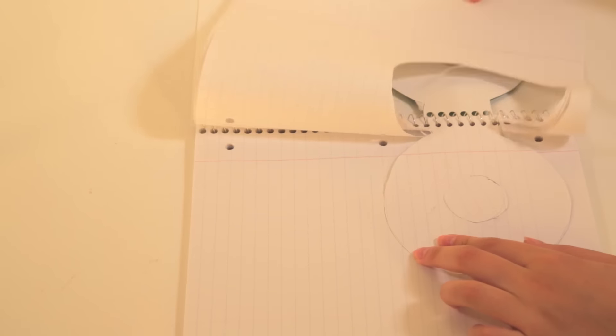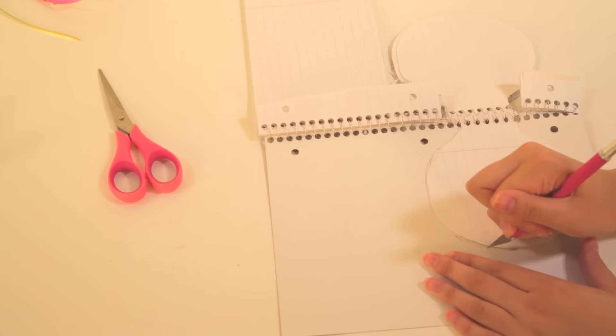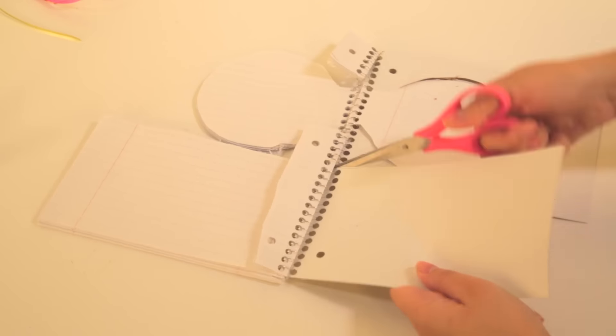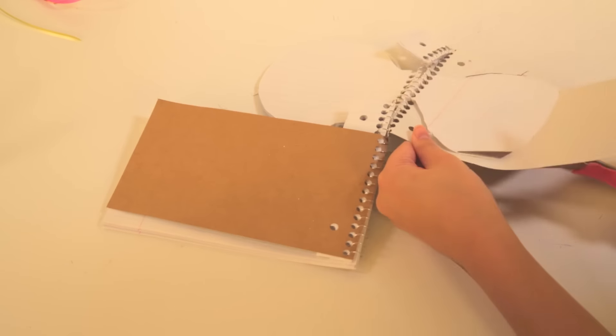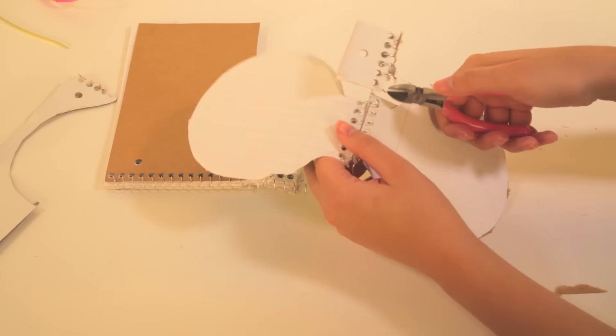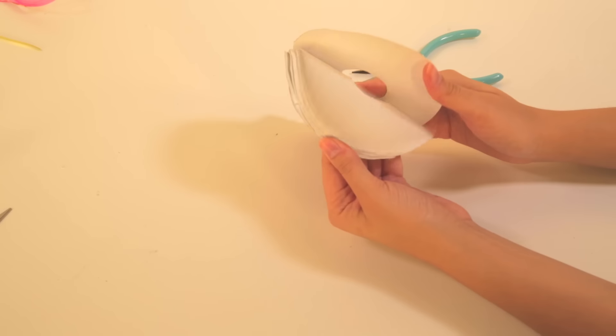Once you've cut through all your notebook pages, cut through the back cover. Use your wire cutters and cut off the excess wire. Use your scissors to clean up any edges.